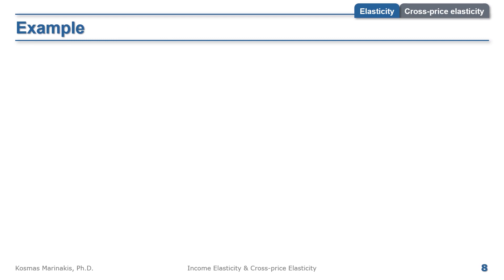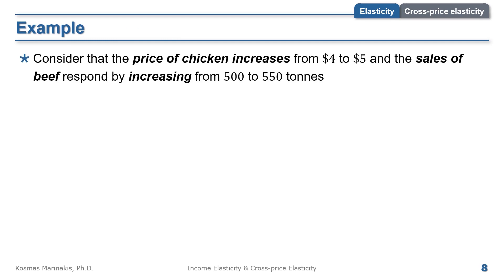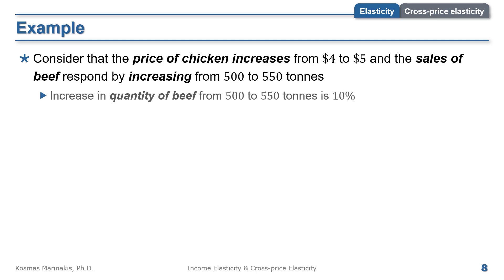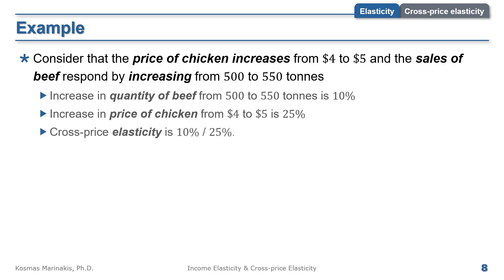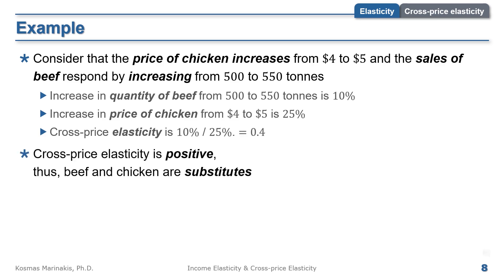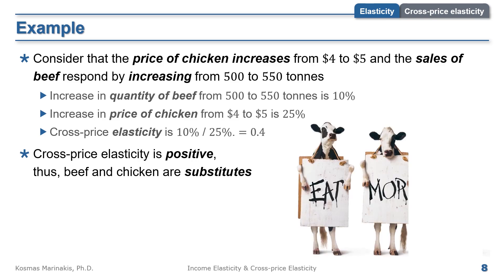Let's see a numerical example. The price of chicken increases from $4 to $5 and the sales of beef respond by increasing from 500 to 550 tons. The quantity of beef increases by 10%, and the price of chicken increases by 25%. Therefore, cross-price elasticity is 10% over 25%, which equals 0.4. It's above zero, so beef and chicken are substitutes — which should be expected.